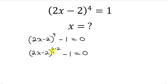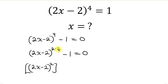We can simplify this further by writing it as (2x minus 2) all raised to the 2, and we're going to be raising this to the power 2, because from indices, powers multiply. So this 2 multiplies this 2 to give back 4, and then minus 1 is the same as 1 squared, and this is equal to 0.